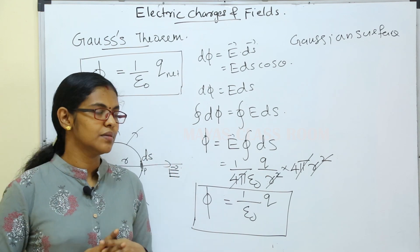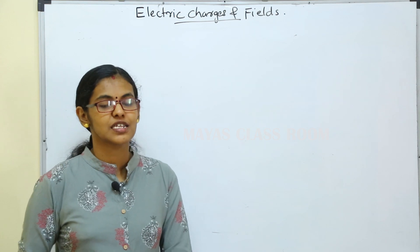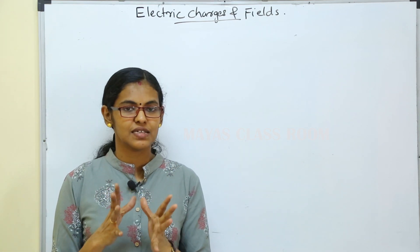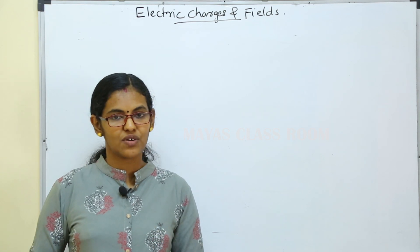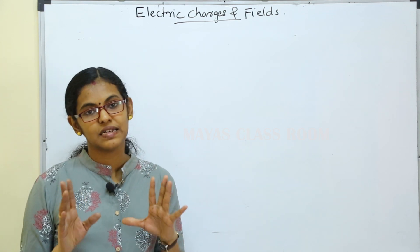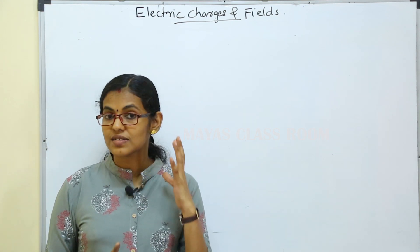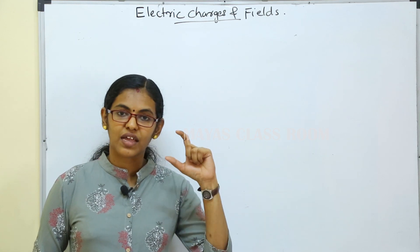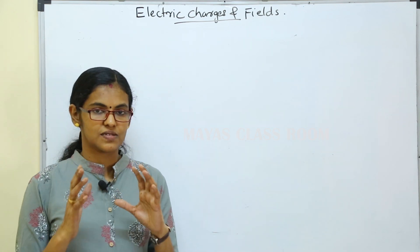To recap: the total number of electric field lines passing normally through a surface is known as electric flux. The equation is E dot S. dφ = E dot dS. The total electric flux over a closed surface equals (1/ε₀) times the total charge enclosed by the surface. The unit is Nm² per coulomb, and it is a scalar quantity.